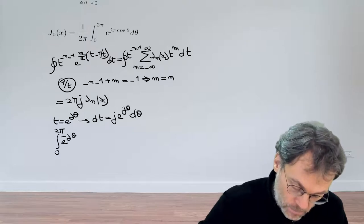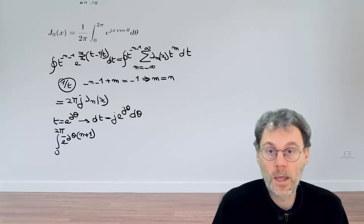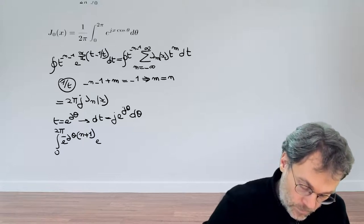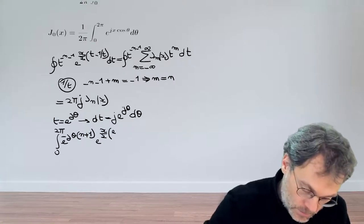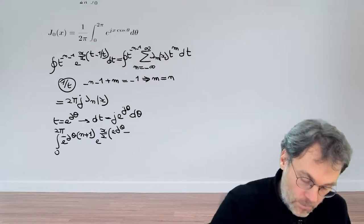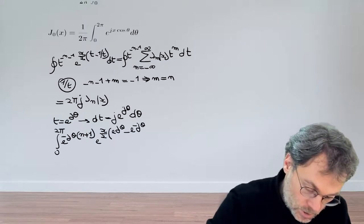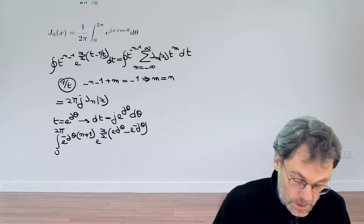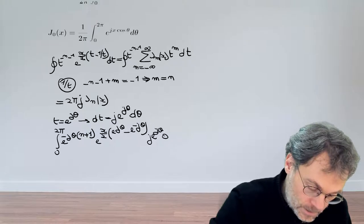So let's write that as minus here n plus 1. Then our generating function, that's e to the power of x over 2. And then we have t, that's exponential jθ minus 1 over 2, that's exponential minus jθ. And then our dt becomes j exponential jθ dθ.